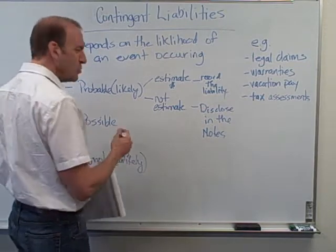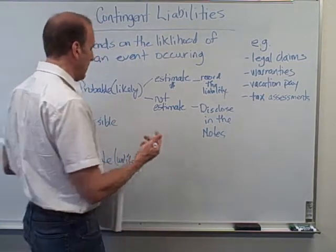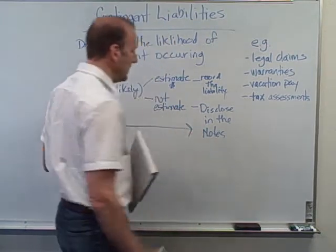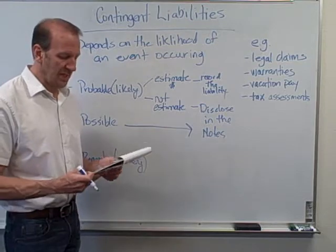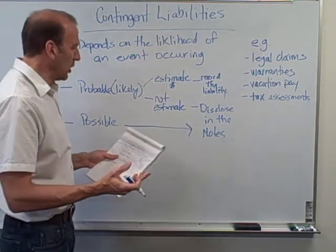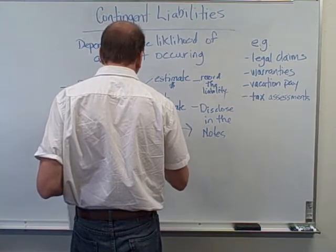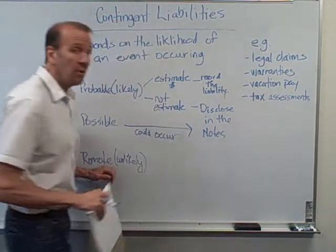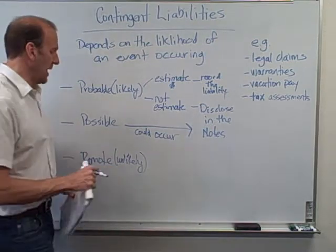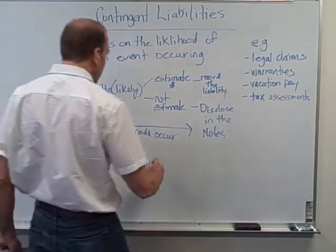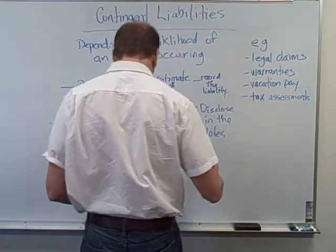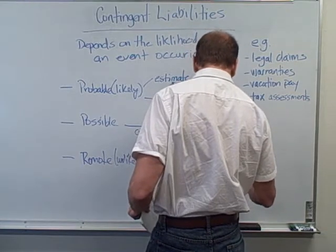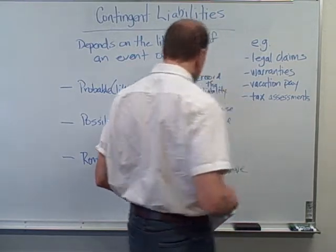Possible means it's reasonably possible that it might happen. Under reasonably possible situations, we're going to disclose it in the notes. It could occur, but it's not probable, and it's not remote yet. Remote means it's unlikely — it's probably not going to happen. So if it's remote, then no disclosure.